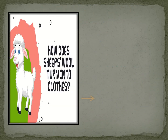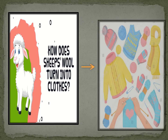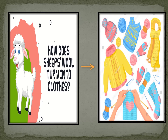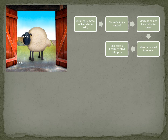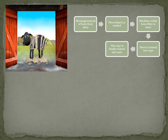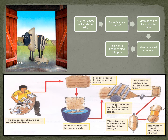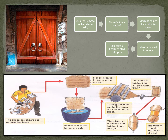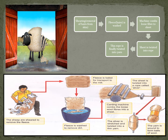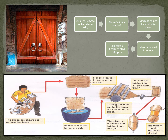Now let's see how sheep's wool turns into clothes. First, shearing of sheep is done. Shearing means removal of hairs from skin. Then these hairs are washed. A machine combs the loose fiber into a sheet. The sheet is then twisted into ropes, and this rope is finely twisted into yarn. This yarn is used to make fabric.